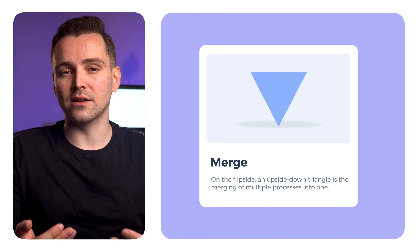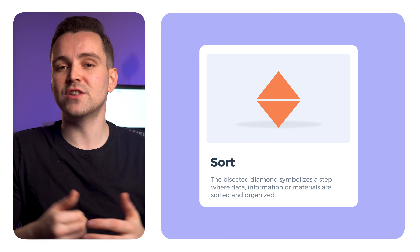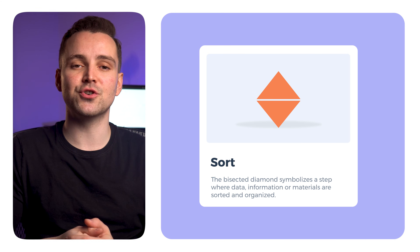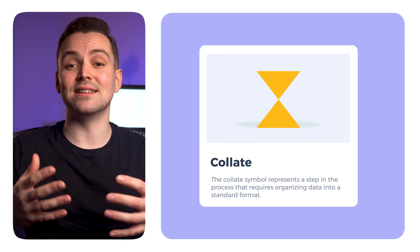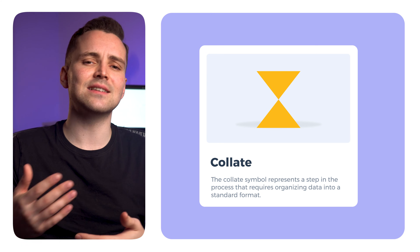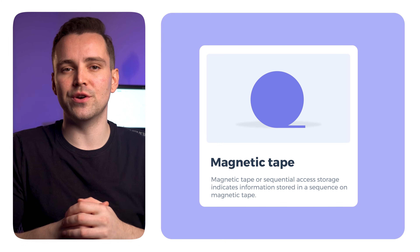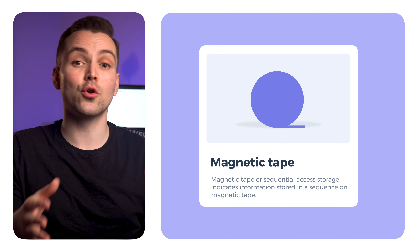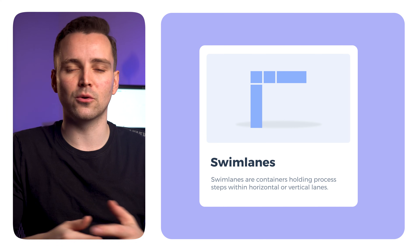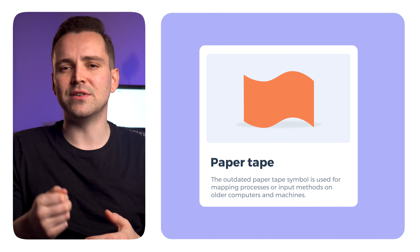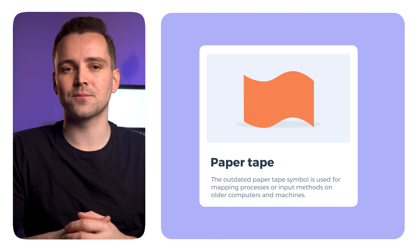On the flip side, an upside-down triangle is the merging of multiple processes into one. The bisected diamond symbolizes a step where data, information, or materials are sorted and organized. The collate symbol represents a step in the process that requires organizing data into a standard format. Magnetic tape, or sequential access storage, indicates information stored in a sequence on magnetic tape. Swim lanes are containers holding process steps within horizontal or vertical lanes. The outdated paper tape symbol is used for mapping processes or input methods on older computers and machines.